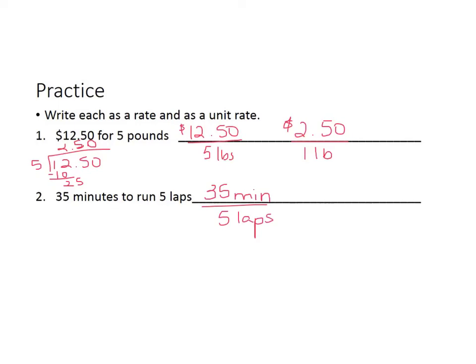Now to write it as a unit rate, you would take the 35 divided by the 5. That goes in 7 times. So the unit rate is basically 7 minutes for every one lap. Or in other words, it takes 7 minutes to run one lap. Please remember that a unit rate, the bottom number, needs to be the single unit. And that's your goal. Find out what the rate is for a single unit.